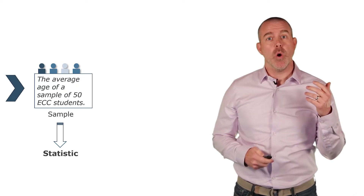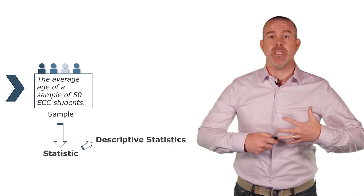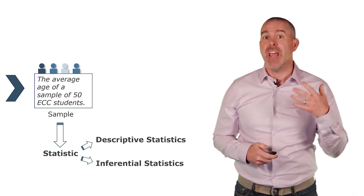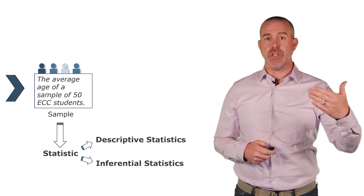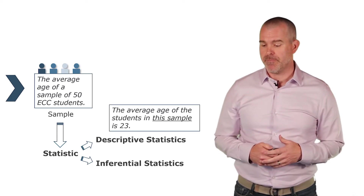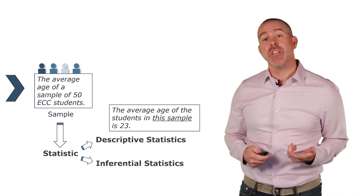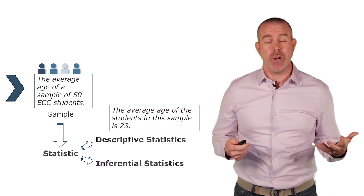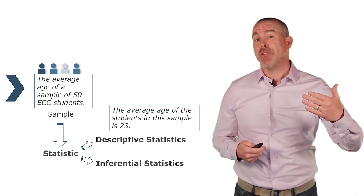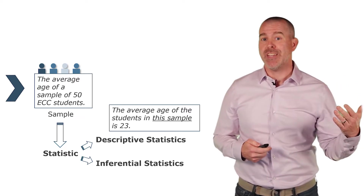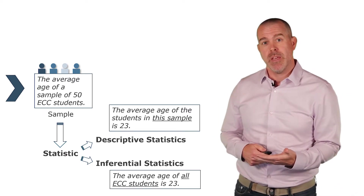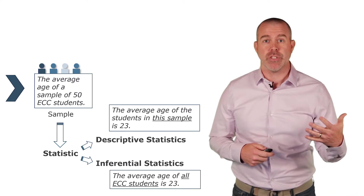There are two types of statistics. One is descriptive — simply describing the sample. Another is inferential, where we try to draw conclusions about the overall population. For example, saying the average age of this sample is 23 is simply descriptive. If we draw an inference about the population and conclude the average age of all ECC students is 23, that's an inferential statistic.